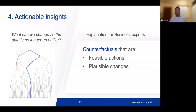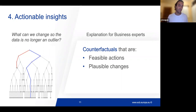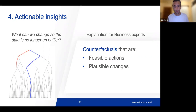Finally, we have actionable insights. In the centralized securities case, we have the problem of identifying an outlier — what can we change so the data is no longer an outlier? In our use case, we use an isolation tree. You can see that changing just one feature in the isolation tree graph moves the instance from one leaf to another. This can be seen as counterfactual explanations, and we want the counterfactuals to be actionable — meaning the suggestions by the machine learning model must be feasible and plausible, so the business expert can deliver insights using this type of explanation.